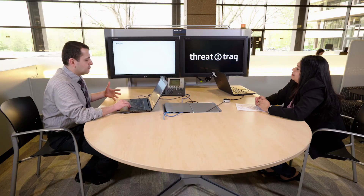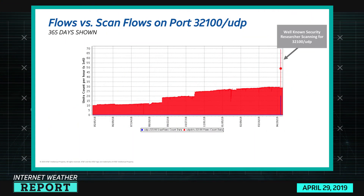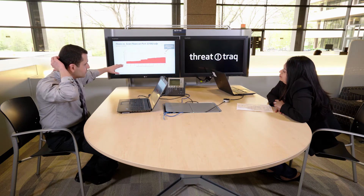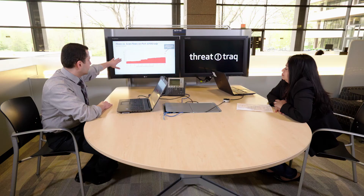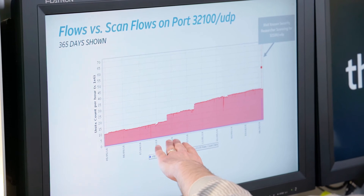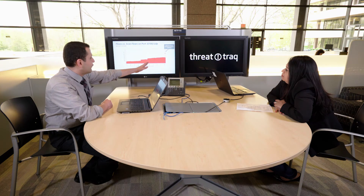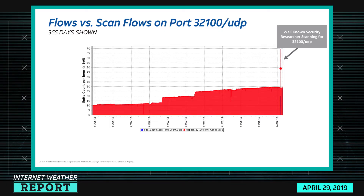Now I wanted to talk about the iLnkP2P vulnerability story and see what we observe on the network regarding it. Looking at the last year of all activity on the port associated with that protocol — UDP destination traffic — you can see that about a year ago there were around 10 million flows per hour for this port. There are interesting step increases, with activity ultimately tripling to about 30 million flow records per hour. This suggests growth in the number of devices on the network using this protocol.